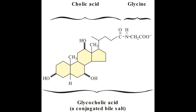Bile salts, made in the liver and stored in the gallbladder, are amphipathic derivatives of cholesterol. Conjugated bile salts consist of a hydroxylated sterol ring structure with a side chain to which a molecule of glycine or taurine is covalently attached by an amide linkage. These emulsifying agents interact with the dietary lipid particles and the aqueous duodenal contents, thereby stabilizing the particles as they become smaller from peristalsis and preventing them from coalescing.